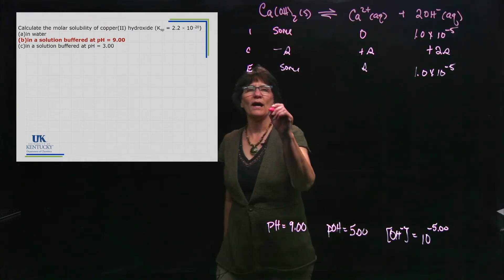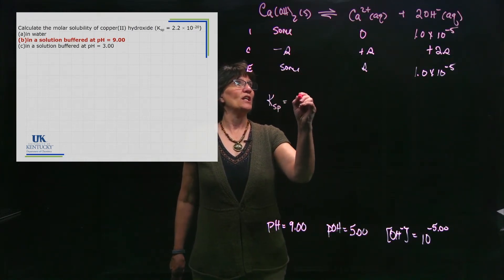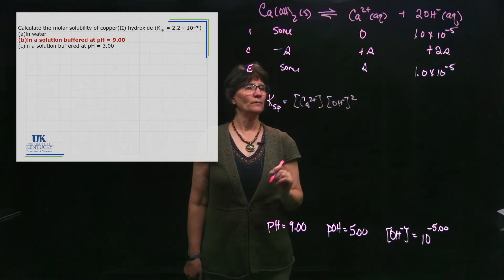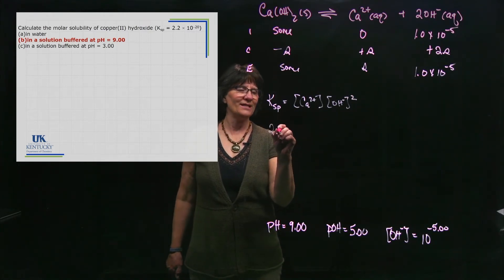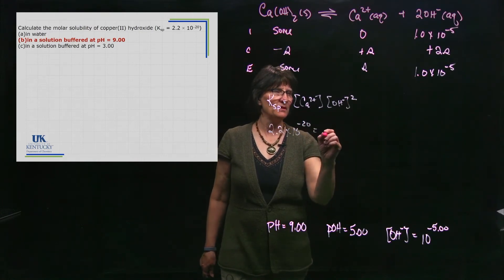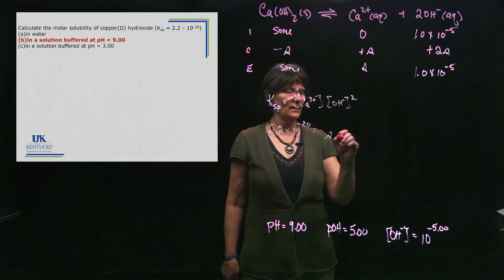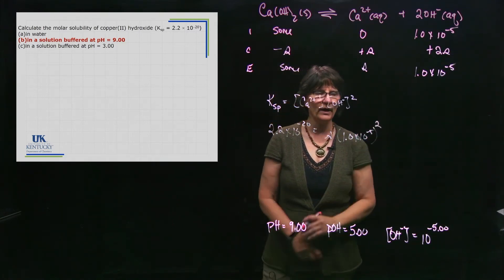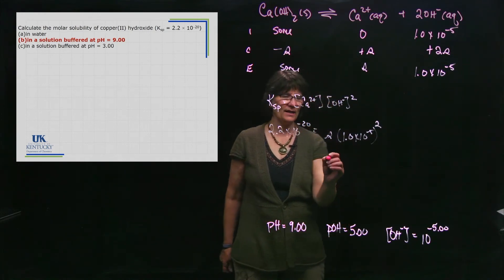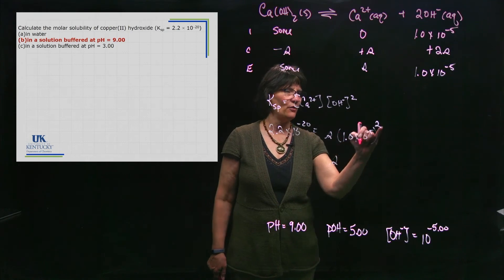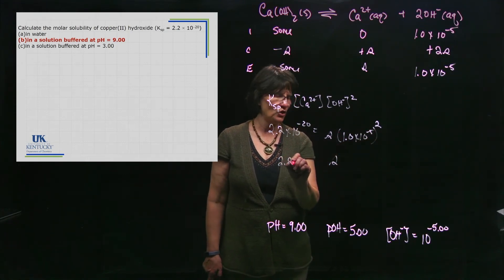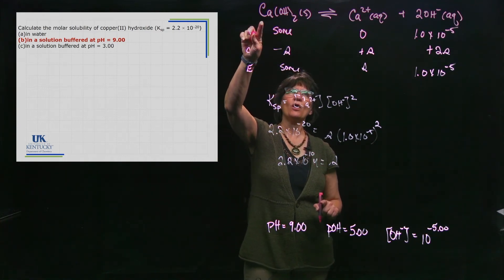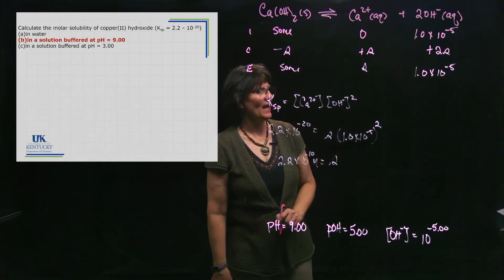Now we can write the Ksp expression: calcium concentration times hydroxide concentration squared. Ksp is 2.2 × 10⁻²⁰. Calcium is s, and hydroxide is 1.0 × 10⁻⁵ squared, which is the equilibrium value held constant by the buffer. It's now straightforward to solve for s: s equals 2.2 × 10⁻²⁰ divided by (1.0 × 10⁻⁵)², giving s = 2.2 × 10⁻¹⁰. That is the molar solubility of calcium hydroxide buffered at pH 9.